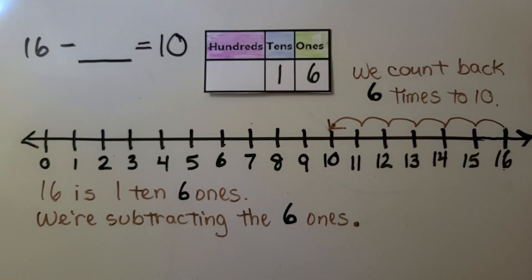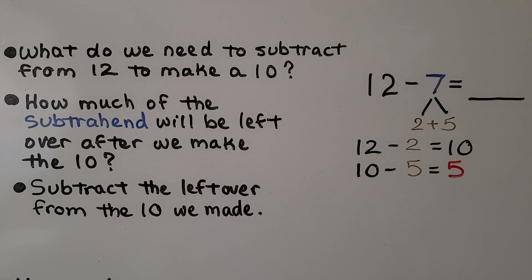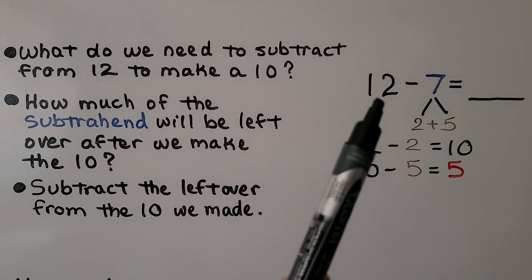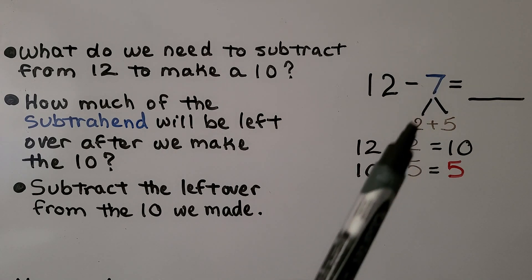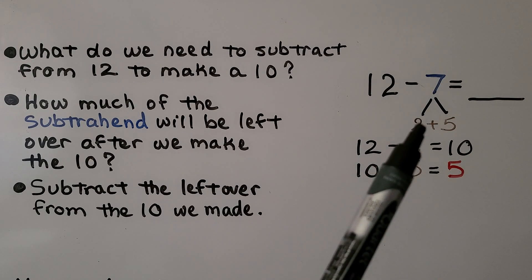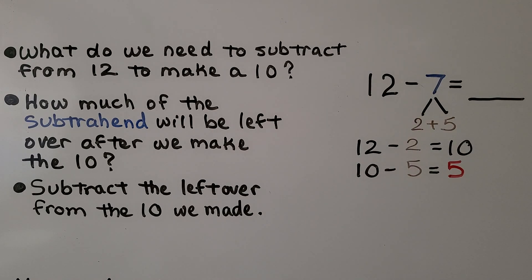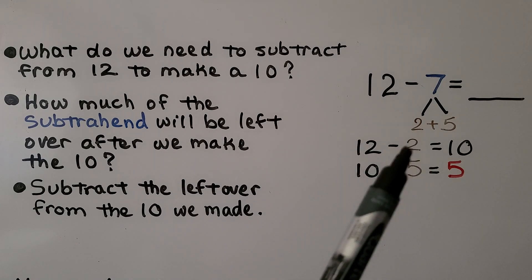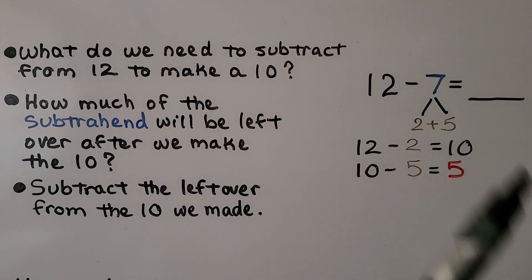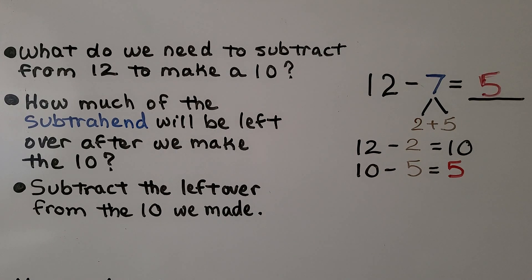What do we need to subtract from 12 to make a 10? We would need to subtract a 2. That means the subtrahend needs to be broken up into a 2 plus a 5 to make a 7. The first thing we do is ask what we need to subtract from the minuend to make a 10, and how much of the subtrahend will be left over. We took 2 away — now we're at 10. We have 5 left over, so we subtract that from 10. 12 minus 7 is equal to 5. When you get good at this, you'll be able to do it with mental math quickly in your head.